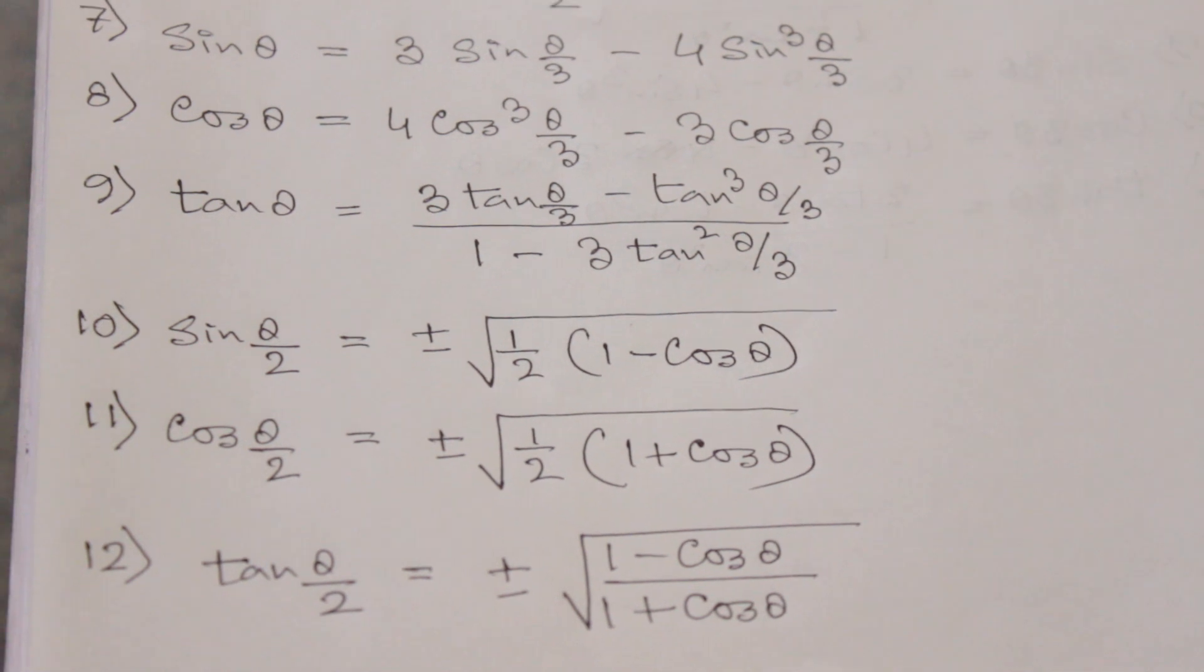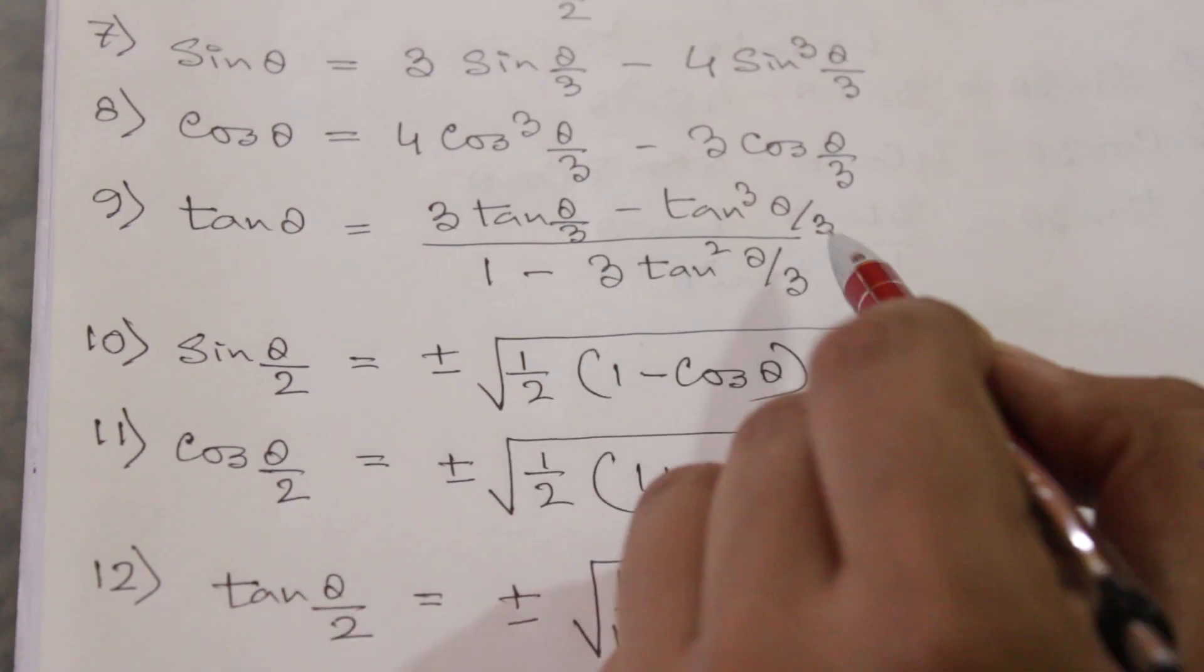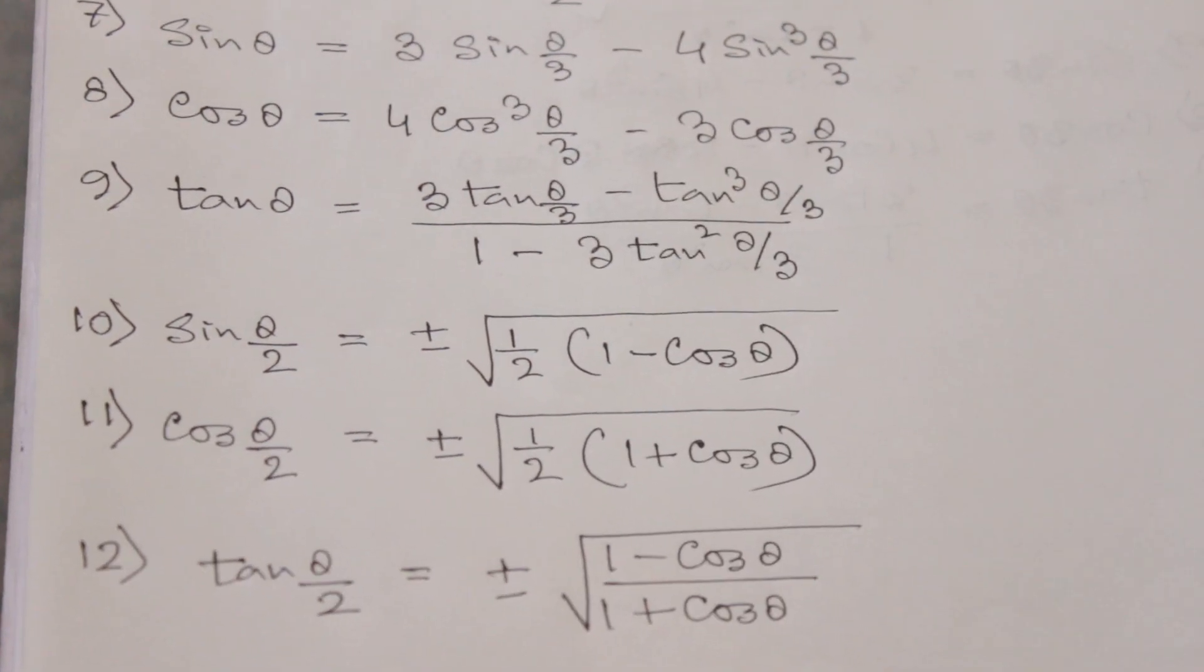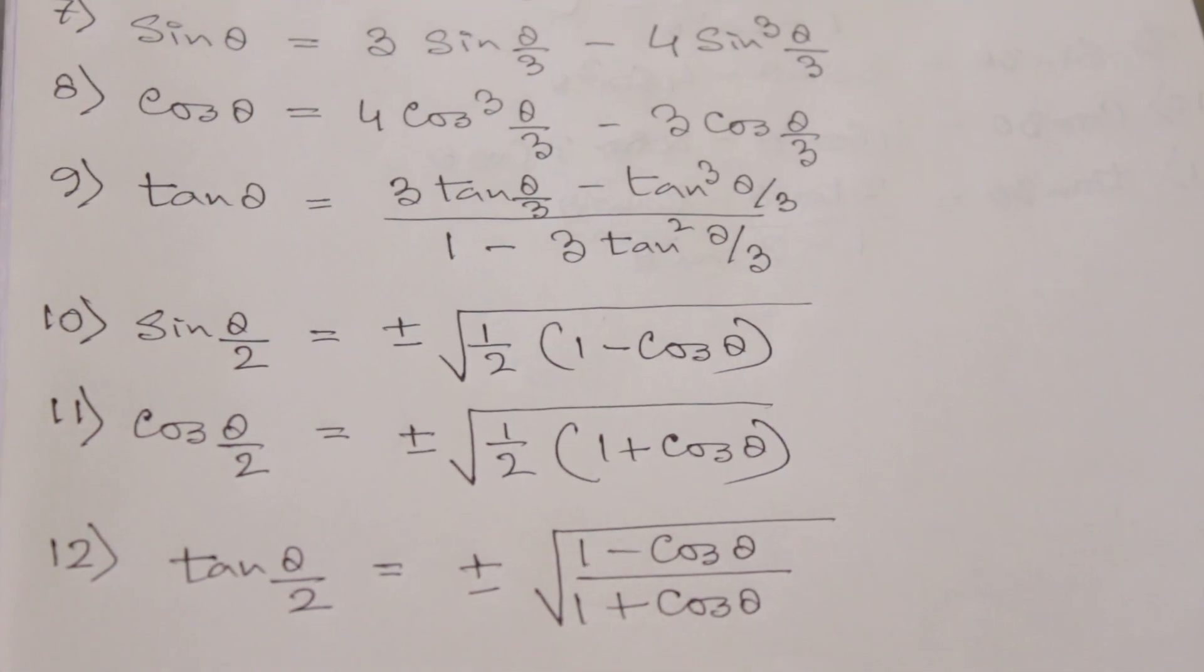Number 9 is tan θ which is equal to 3 tan θ/3 minus tan³ θ/3 by 1 minus 3 tan² θ/3.